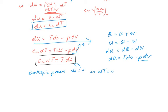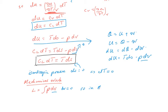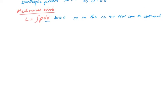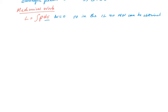Now, the definition of mechanical work — let's write it as L — is equal to the integral of P dV. We know that dV is always zero for an ideal liquid, so no mechanical work can be obtained.